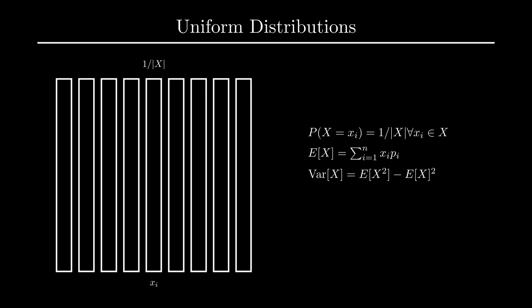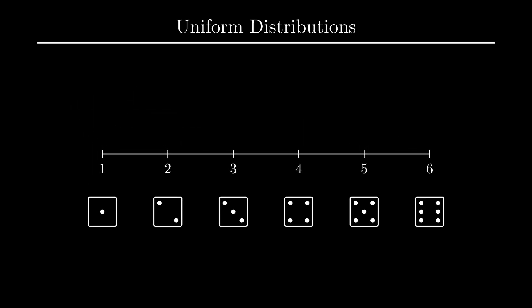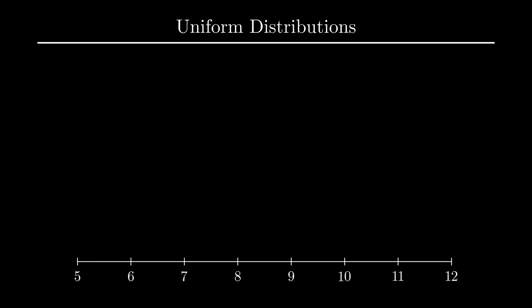For example, when you roll a dice from 1 to 6, the uniform distribution spans the integers from 1 to 6. Another problem might say that the distribution spans the integers from 5 to 12. In cases like these, we can take shortcuts to compute useful information about the distribution.